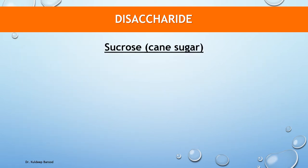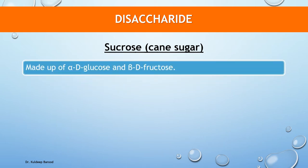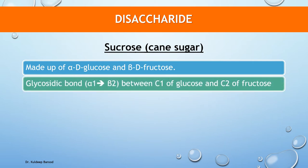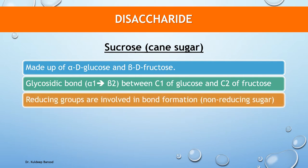Sucrose, also called cane sugar or table sugar, is mostly produced by sugarcane and sugar beets. It is made up of alpha-D glucose and beta-D fructose, held together by an alpha-1,beta-2 glycosidic bond between the first carbon of alpha-glucose and the second carbon of beta-fructose. The reducing groups of both glucose and fructose are involved in forming this bond, making sucrose a non-reducing sugar that cannot form osazones.